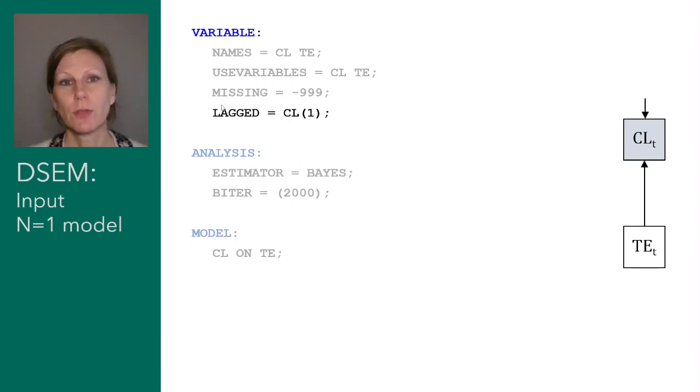Here we add to the variable commands the option lagged, and we indicate we want a lagged version of closeness. I say I want it to be lagged by one time point. So this means we're going to get, in addition to closeness at occasion t, we also get closeness at occasion t minus one. Because these are daily diary data, we can think of this as yesterday and today.